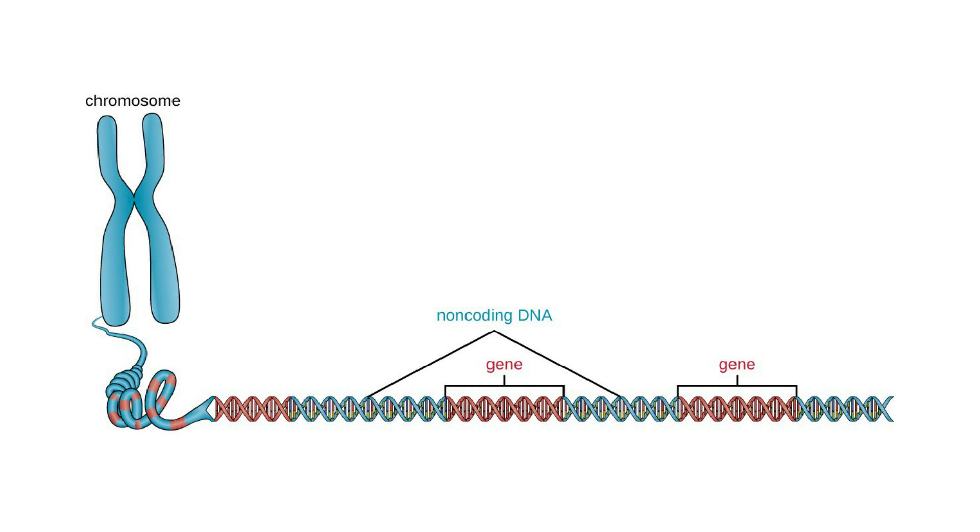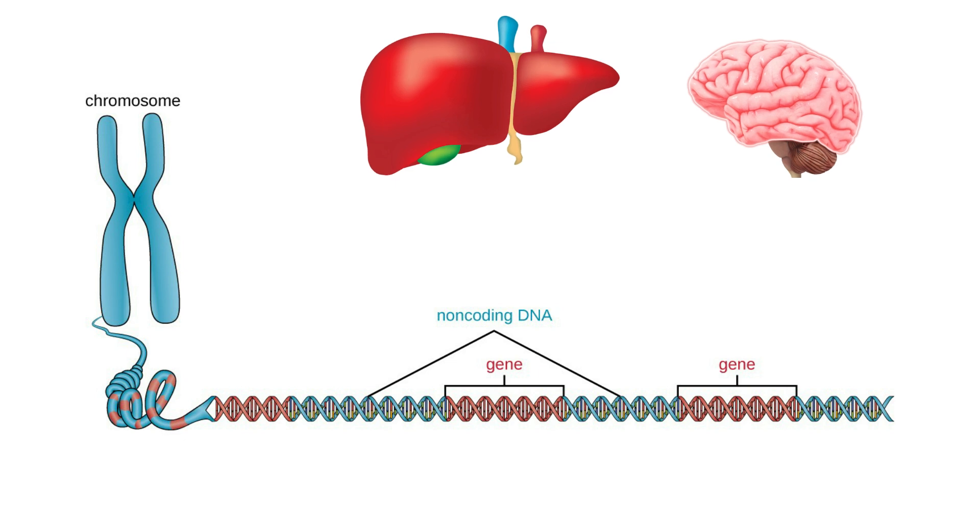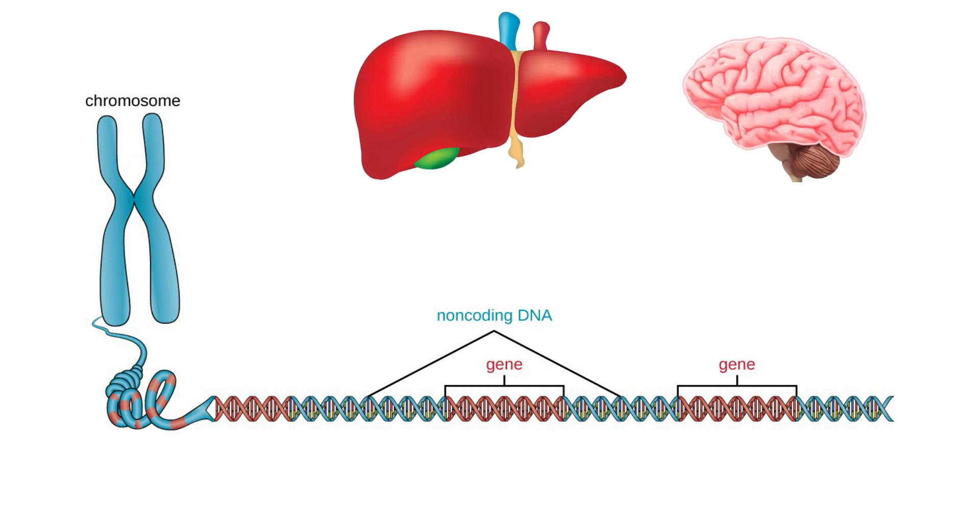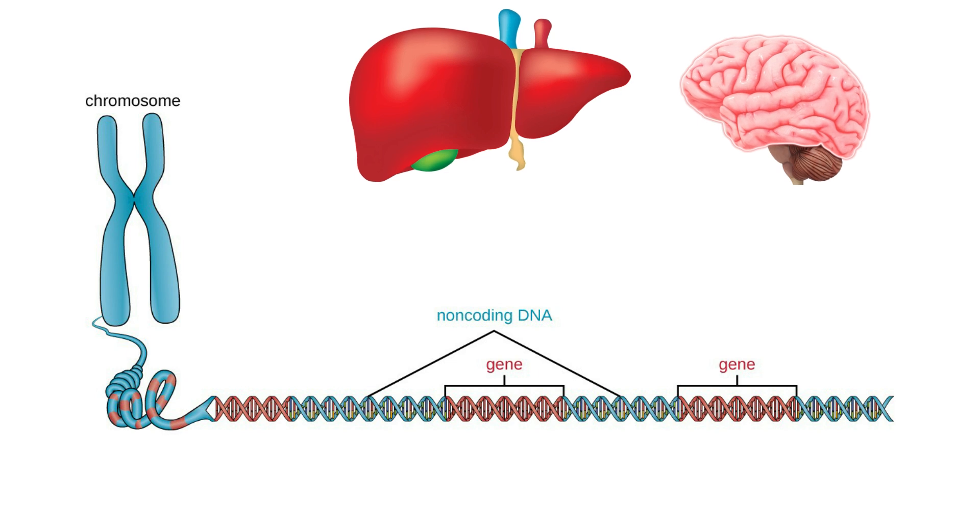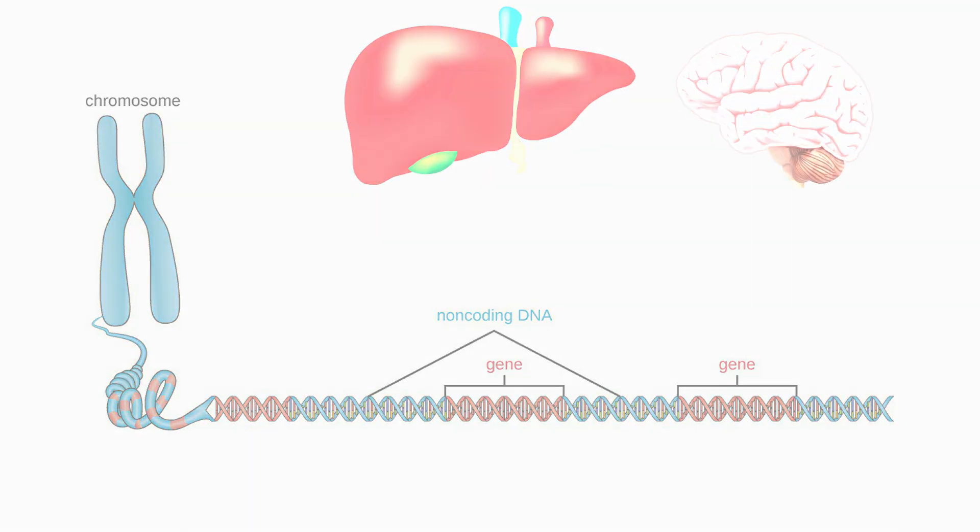A gene is what gives a cell its identity. Gene determines what kind of cell it should be. This is why the cells of the liver and the brain are not the same. Liver cell genes will code specific types of proteins that will make it a liver cell, and the brain cell genes will code different types of proteins that will make it a brain cell.